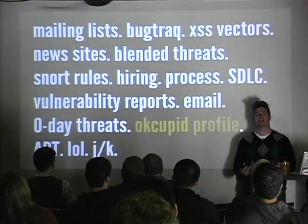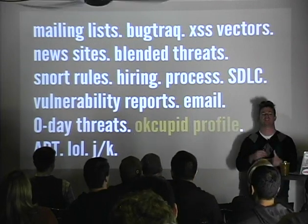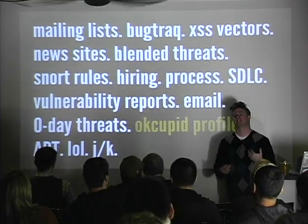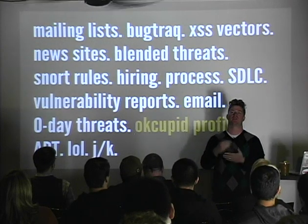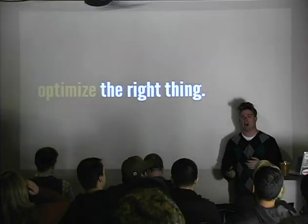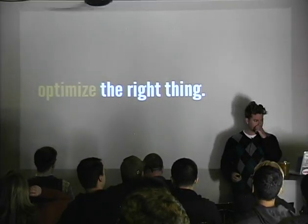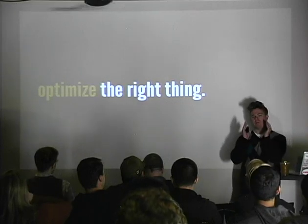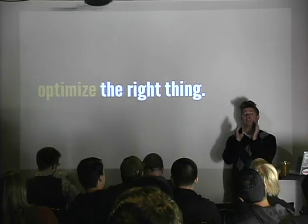Let's get real. Security is incredibly hard, and it doesn't matter what type of security you do - application security, network security, product security. There's a lot of stuff you have to track. As you're tracking all of these things, your entire day is basically taken up, and you have to constantly be prioritizing. The question is: what's the biggest priority? As security people, the thing I've started noticing is that we optimize the wrong thing.